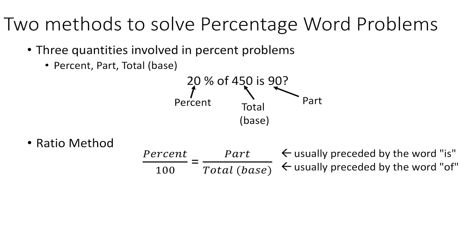When you're looking at these questions, the part is usually preceded by the word is, and the total or the base is usually preceded by the word of. You can see that in the example above, 20% of 450, which was the base, is 90.